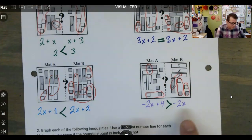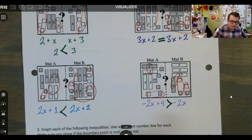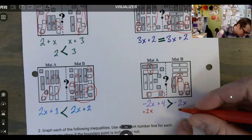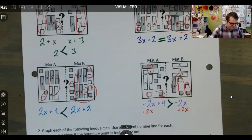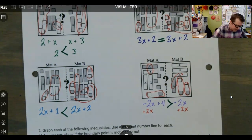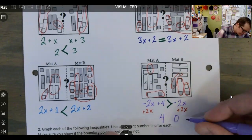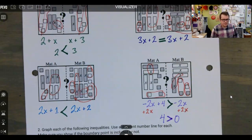So again, we could do whatever we want to both sides, which really what we would do here is add positive 2X. And when you add positive 2X, it's going to cancel out the negative 2X. And what that's going to get us down to is just positive four on the left side, zero on the right side, and four is of course larger than zero.